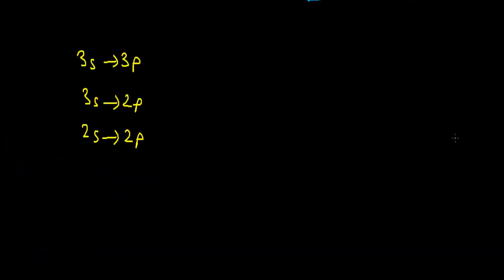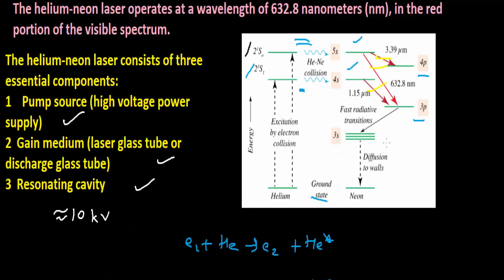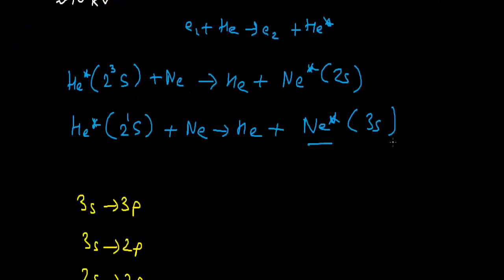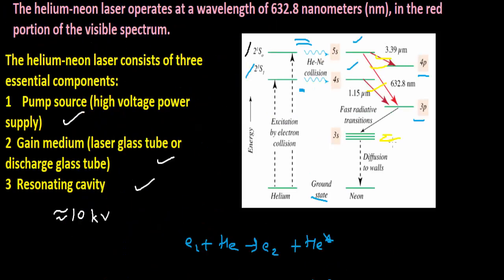After that, the neon atoms return from the lower energy levels of 3p and 2p to the level of 1s. From the level 1s, the neon atoms return to the ground state through collision or diffusion to the walls of the tube. After colliding, it will lose energy and the walls will gain energy in terms of heat.